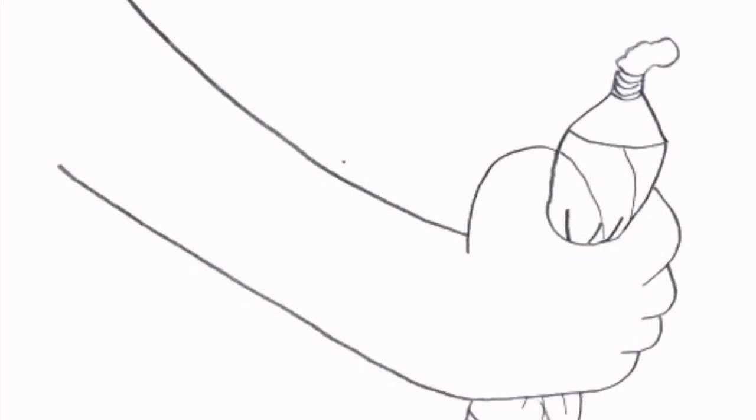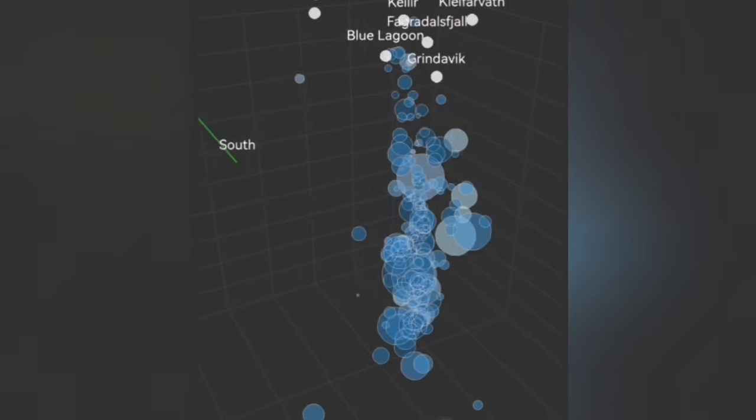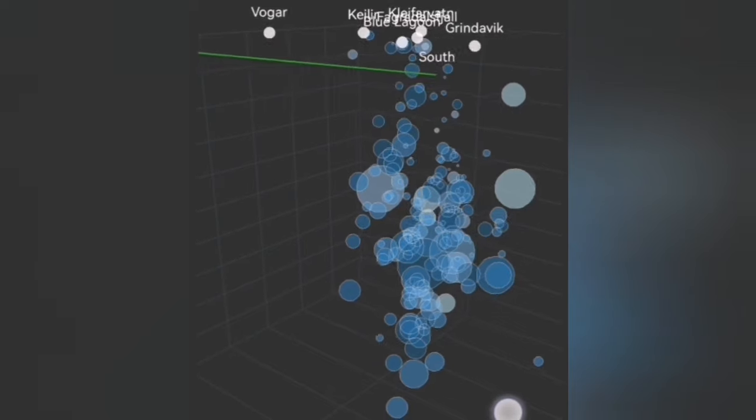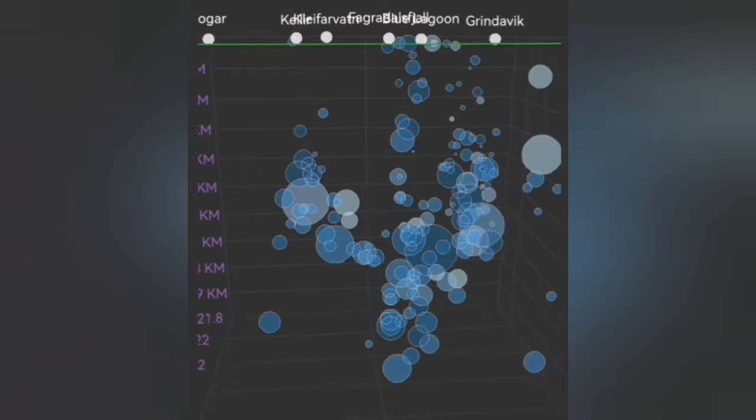This is a similar analogy to what happens now in the Reykjanes Peninsula for the Svartsengi volcanic system. We can see the pattern of the earthquake and the depth of them rising from the 10 kilometer which is the top of the mantle.